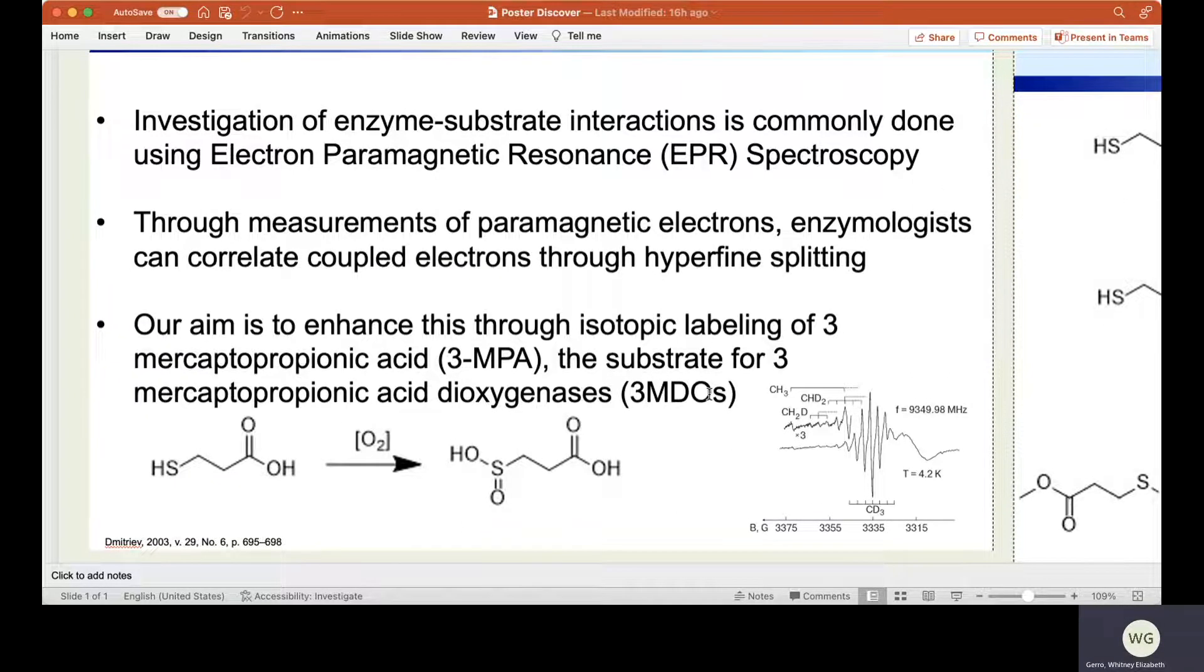EPR spectroscopy, which is analogous to NMR spectroscopy, is commonly utilized for the investigation of enzyme-substrate interactions. Through measurements of paramagnetic electrons, enzymologists can correlate coupled electrons through hyperfine splitting. The closer electrons are to the enzyme binding site, the more signals they produce.